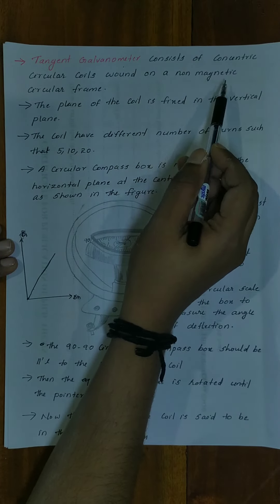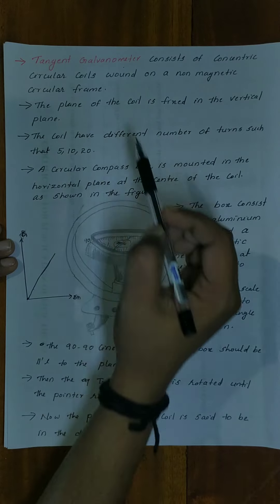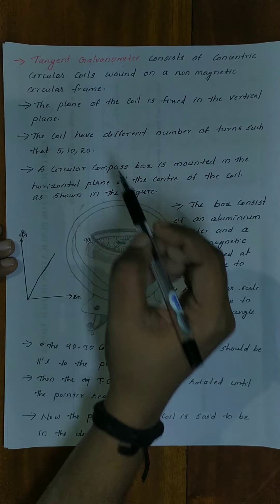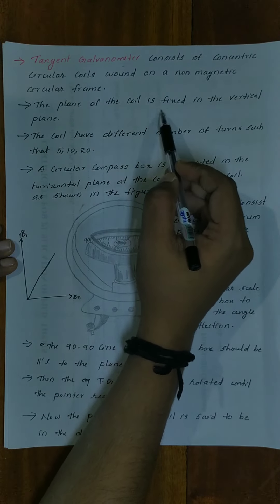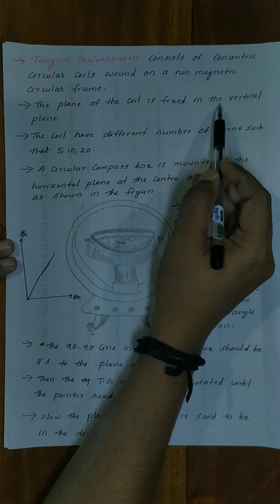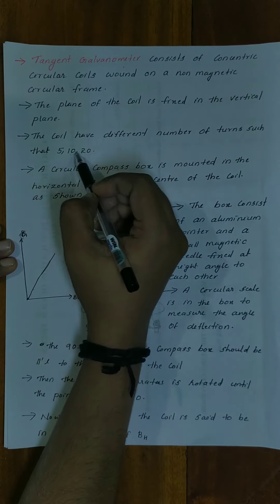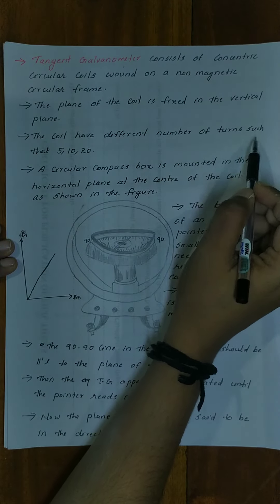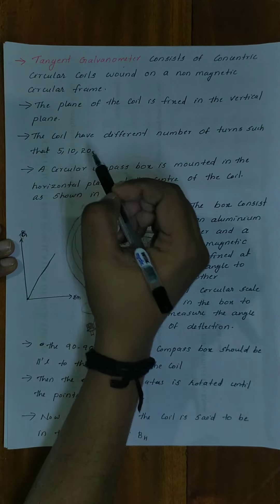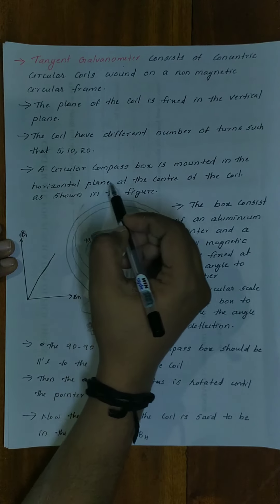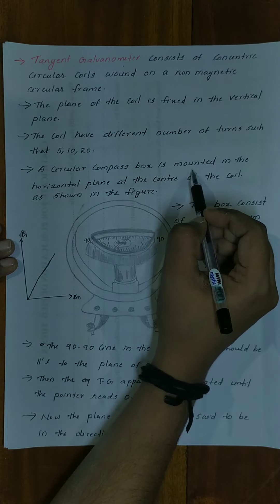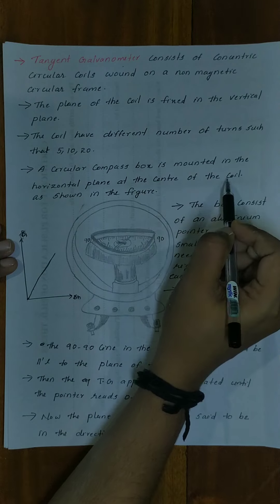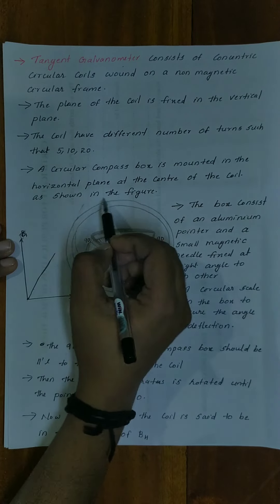The coil is mounted on a non-magnetic circular frame. The plane of the coil is fixed in the vertical plane. The coils have different numbers of turns such as 5, 10, and 20. A circular compass box is mounted in the horizontal plane at the center of the coil.